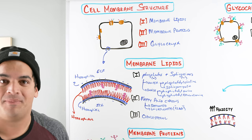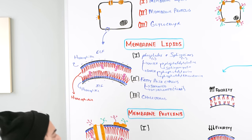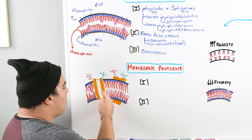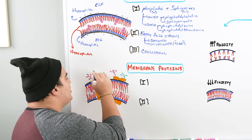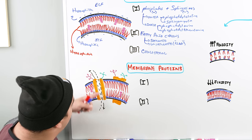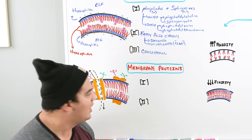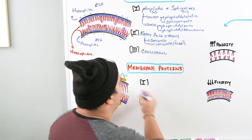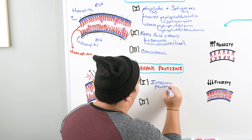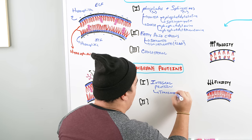So to recap, membrane lipids consist of: the phosphate and sphingosine heads on the outer and inner membrane that are hydrophilic; the hydrophobic fatty acid chains in the center; and cholesterol deposited into the membrane. Now let's talk about the second component: membrane proteins. These proteins can span the entire cell membrane from outer to inner — these are called integral proteins, and the most common type that spans the whole membrane is called a transmembrane protein.